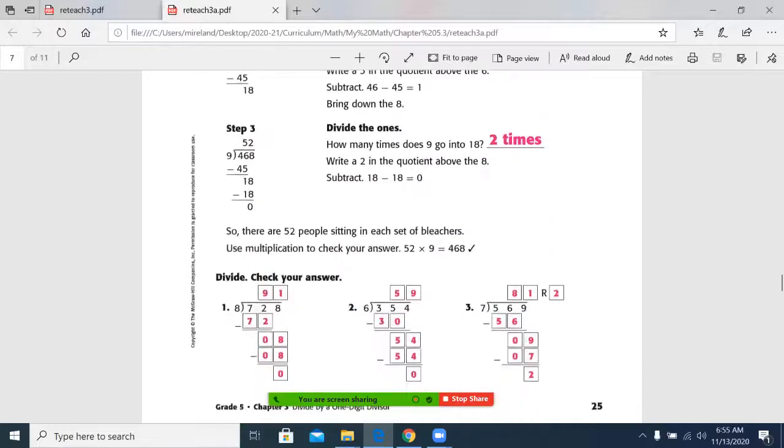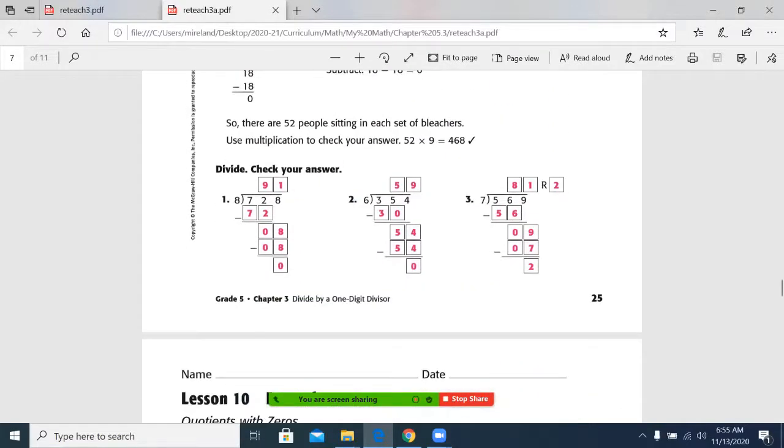And really the key idea was placing the first digit. And we had talked about does 8 go into 7? No. So we go into the next number to the right, 72. And that means we have to put our 9 over the 2 in 72, not over the 7 in 70.